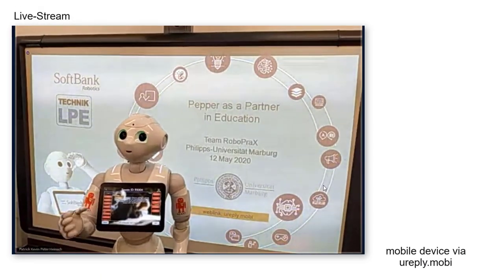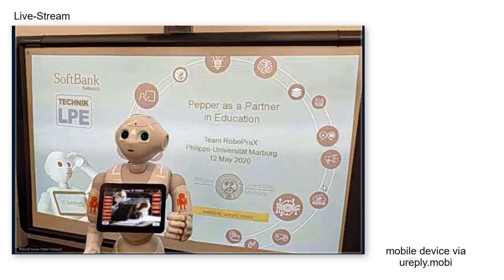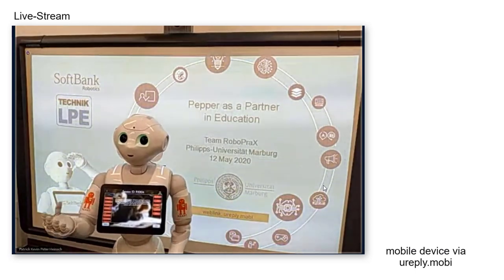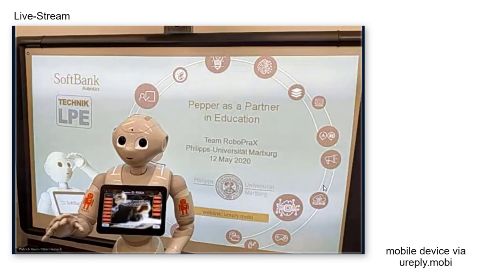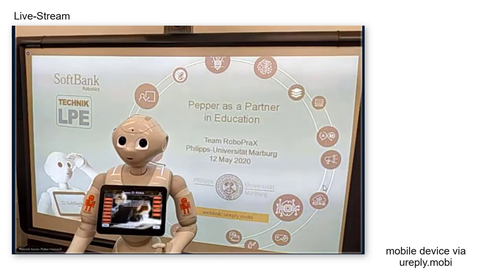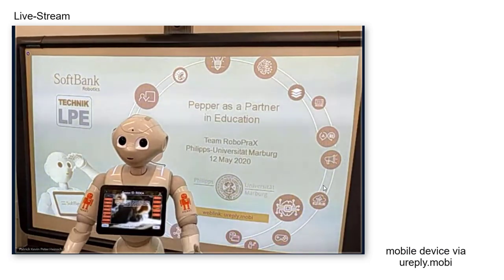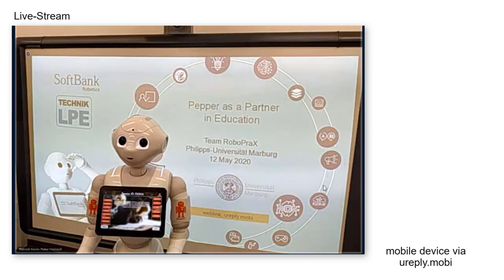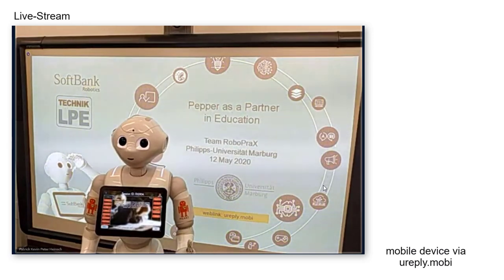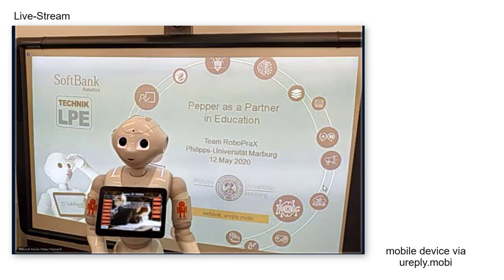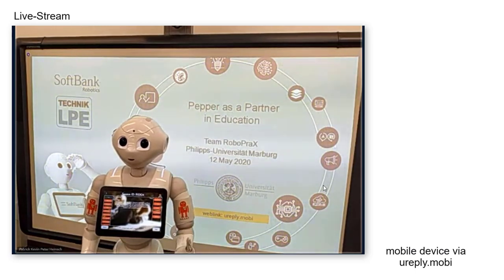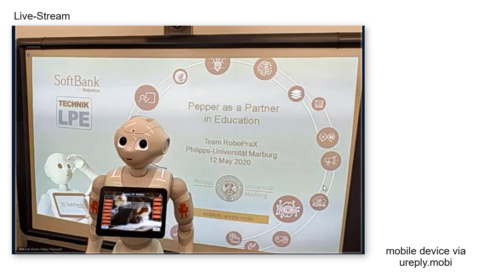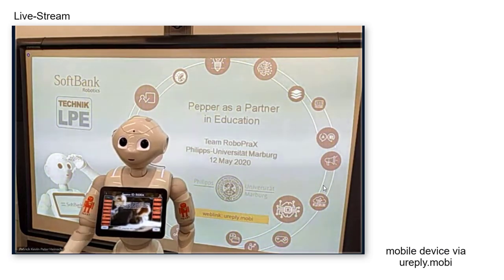Please take out your mobile devices and go to the website uReply.mobi. Today's session code is capital R, one, zero, one, zero, four — R10104.